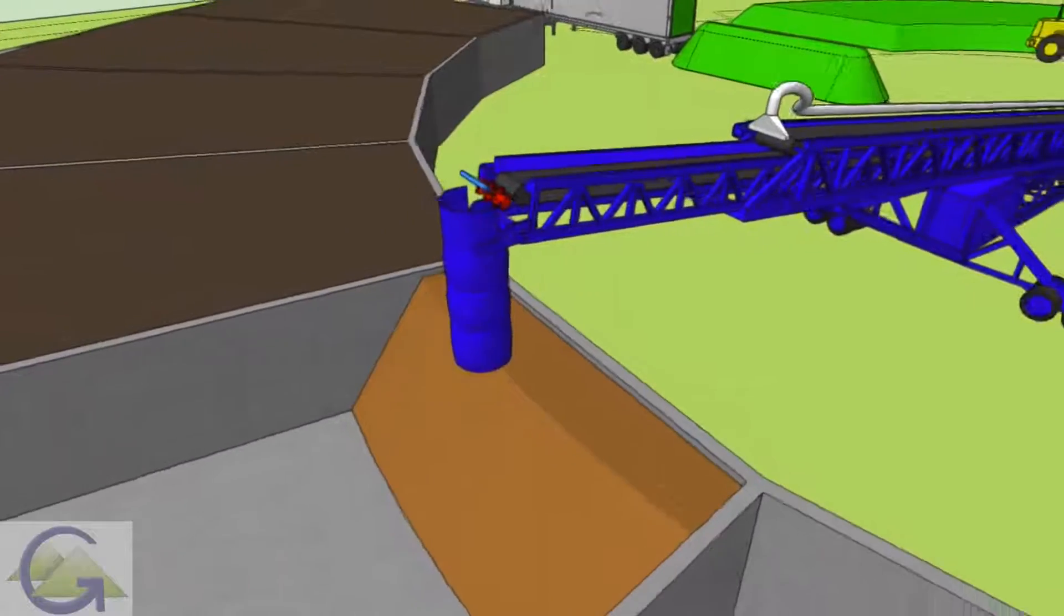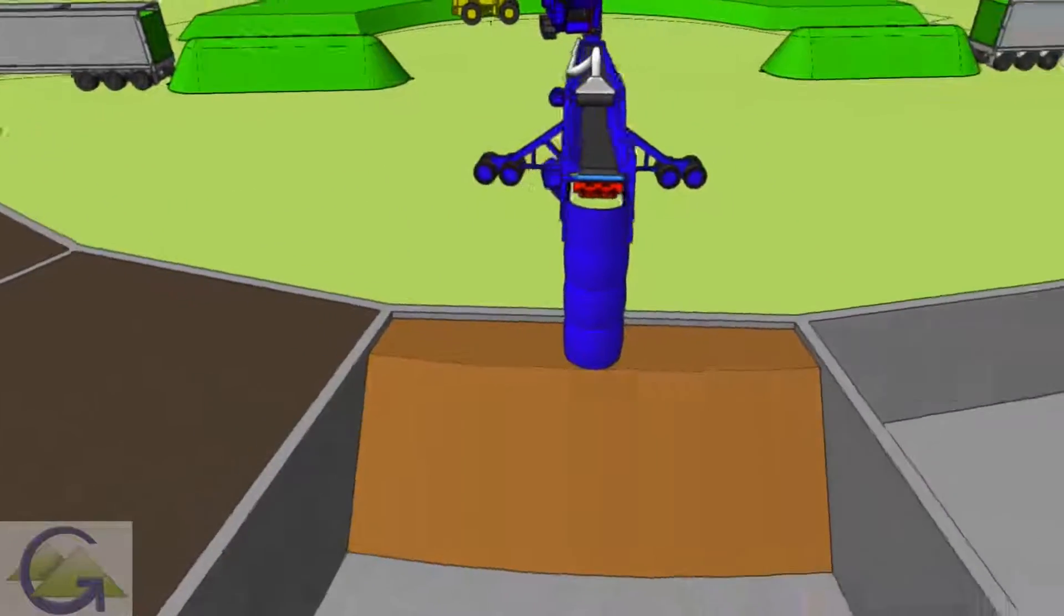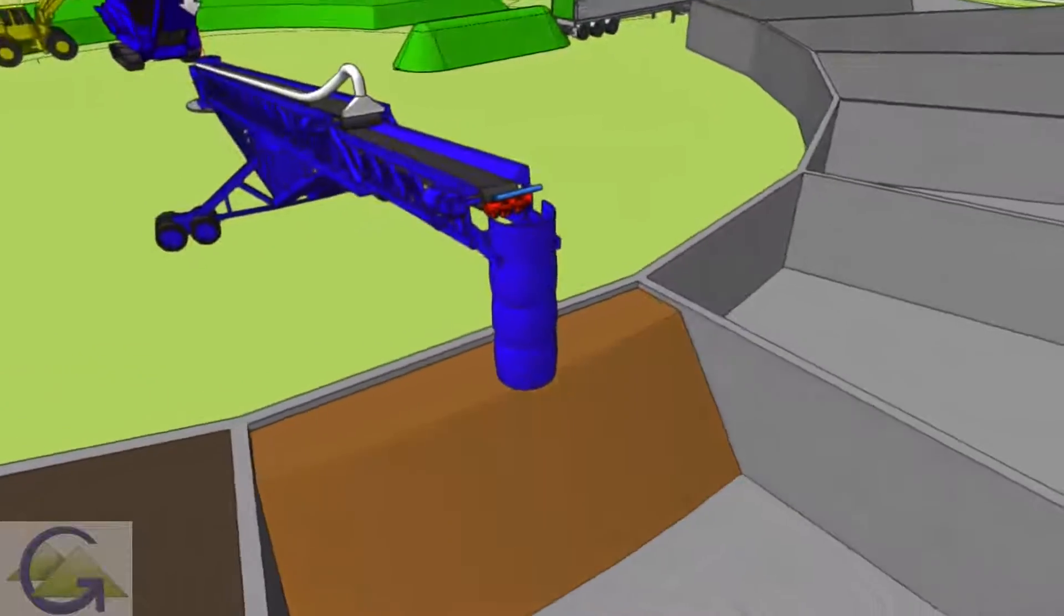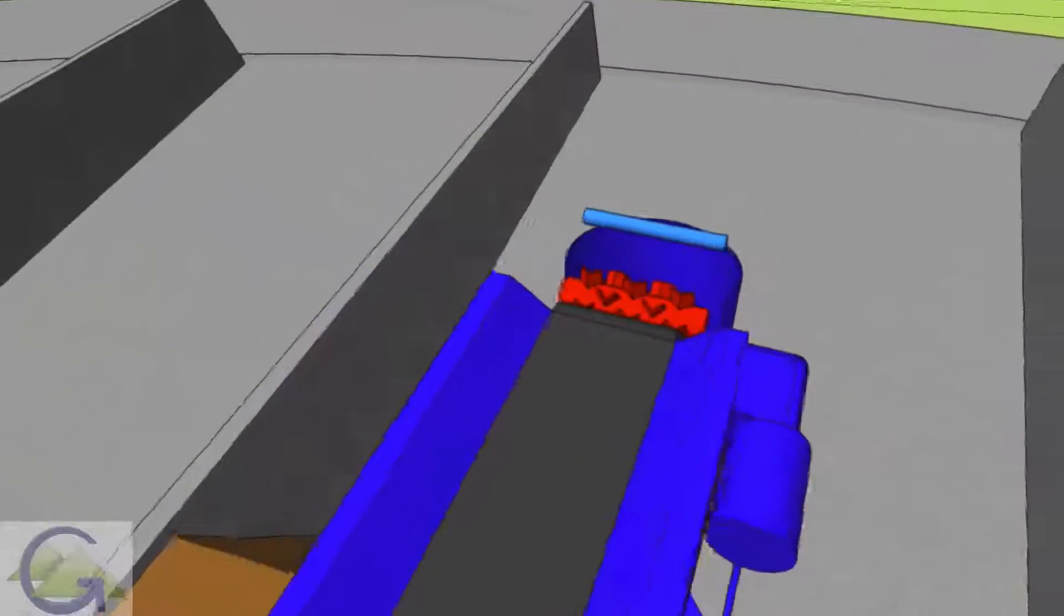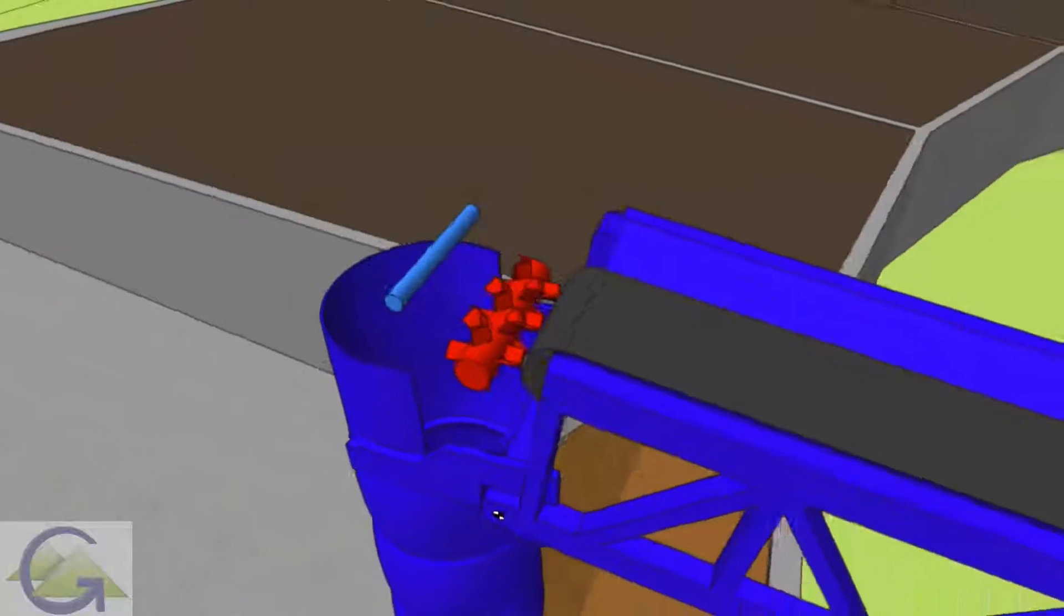As the zone is filled, the telescoping conveyor automatically moves from side to side to completely fill the zone evenly. A high-speed flail at the end of the conveyor makes sure the clumps are pulverized and have high porosity.